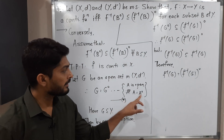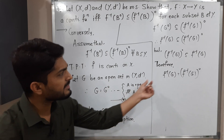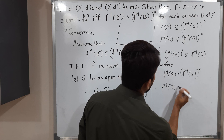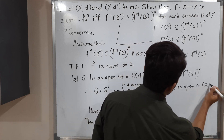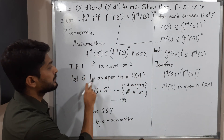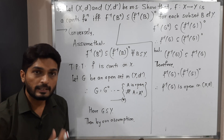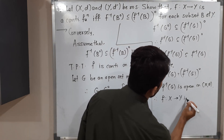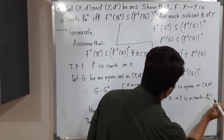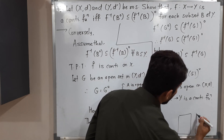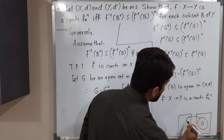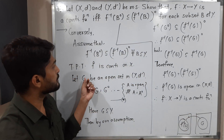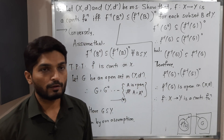We have the result that A = A° if and only if A is open. Since f⁻¹(G) equals its own interior, f⁻¹(G) is open in (X, d). We started with G being any open subset of (Y, d') and proved that its inverse image is open in (X, d). By the open-set definition of continuity, therefore f from X to Y is a continuous function.